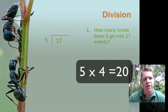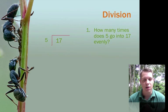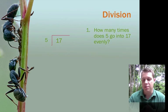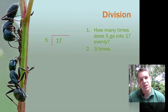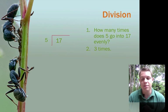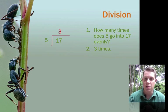5 times 4 is 20. 20 is more than 17. I can't do that. So I'm going to go with 5 times 3. So we can say that 5 goes into 17 3 times evenly. So you put the 3 on top.